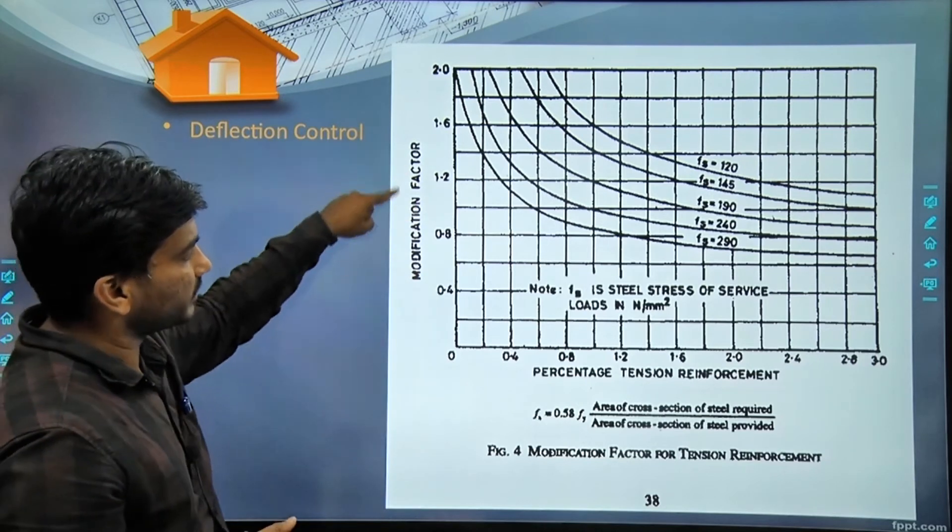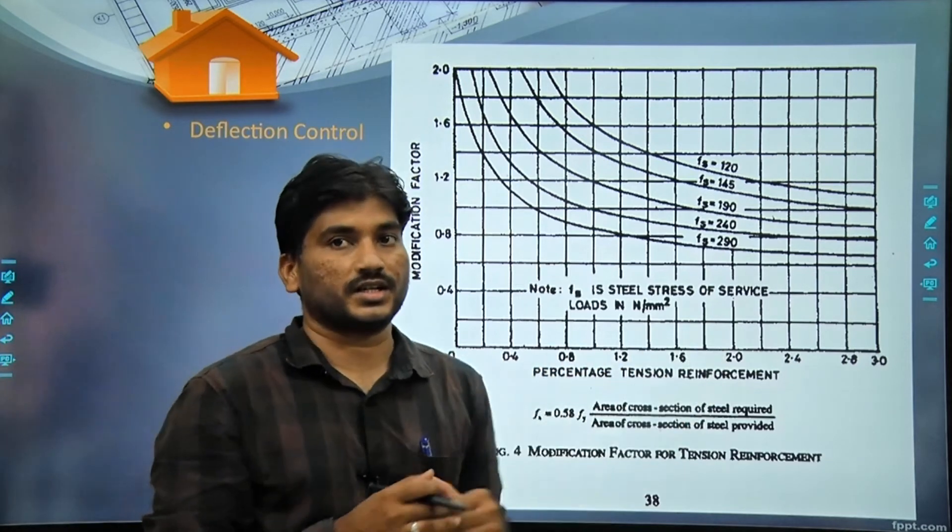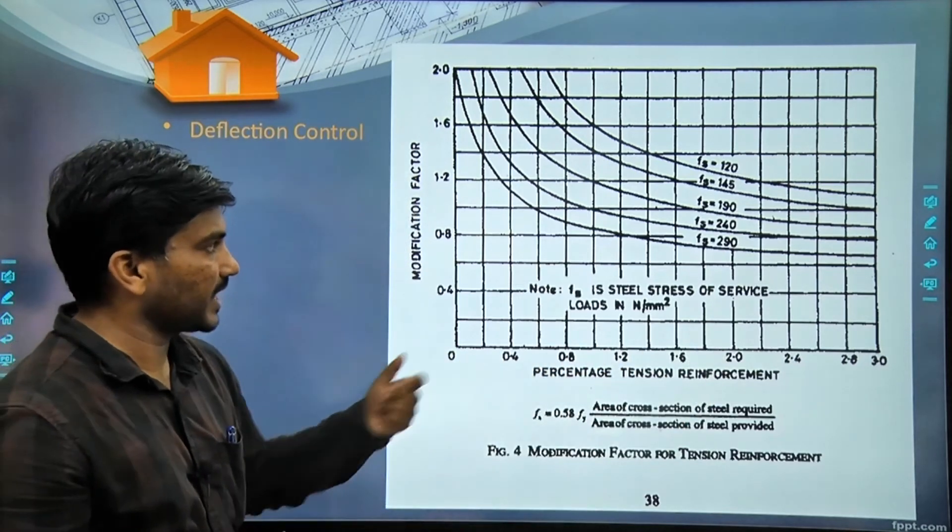For this a graph is given with modification factor on the y-axis with values 0.4, 0.8, and percentage of tension reinforcement on the x-axis.